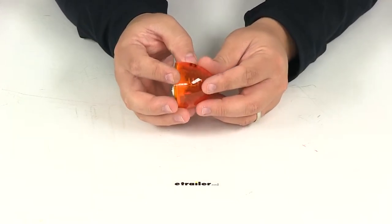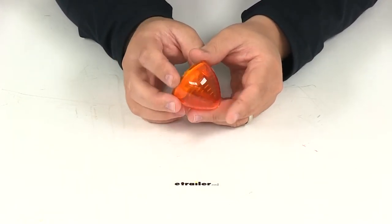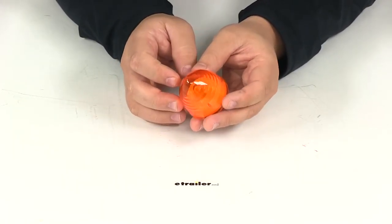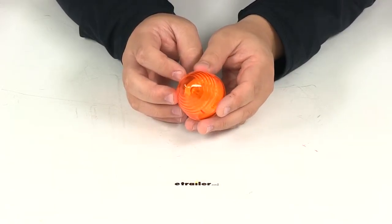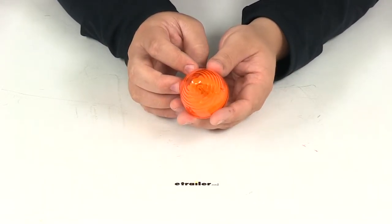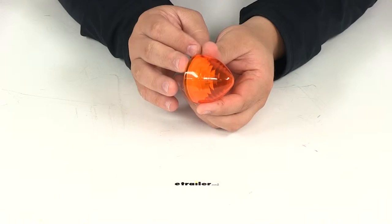The Amber Beehive light functions as a clearance or side marker light. It can also function as a rear tracking light. This is a PC rated light so it can function as both a clearance and side marker when mounted at a 45 degree angle.